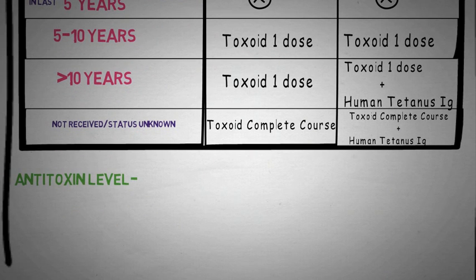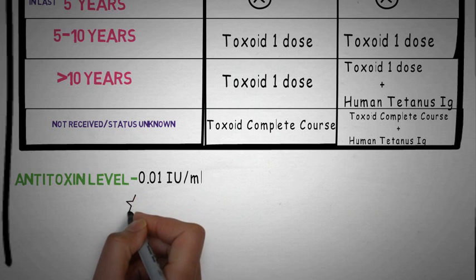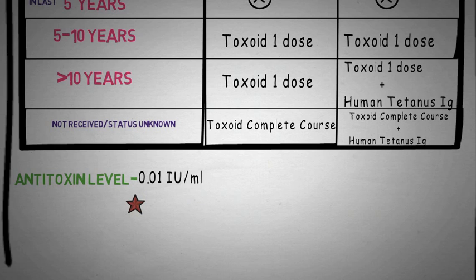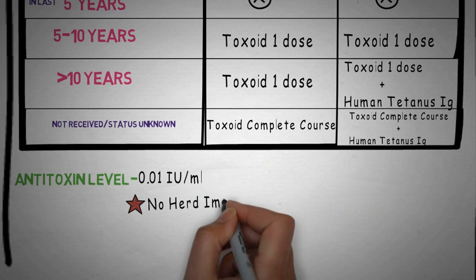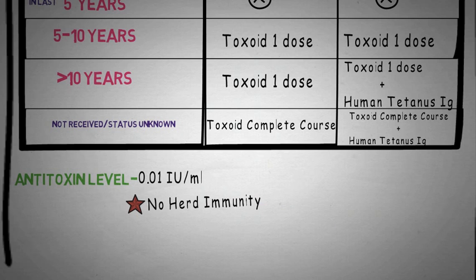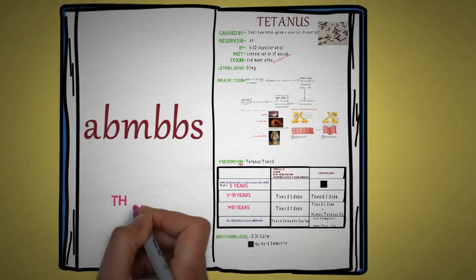Finally, the minimum antitoxin level needed in our body to prevent Tetanus is 0.1 international units per mL. Lastly, remember there is no herd immunity in Tetanus — that is, immunization of one person does not prevent infection in another person.